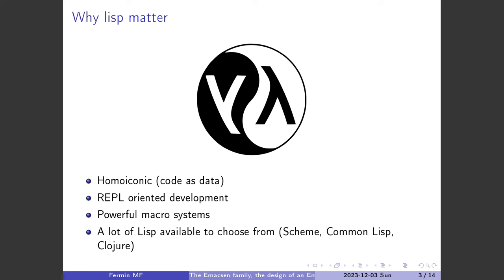There are three main ones: Scheme — by Guile — Common Lisp, and Clojure. Common Lisp has various implementations, and Clojure has Clojure and ClojureScript.